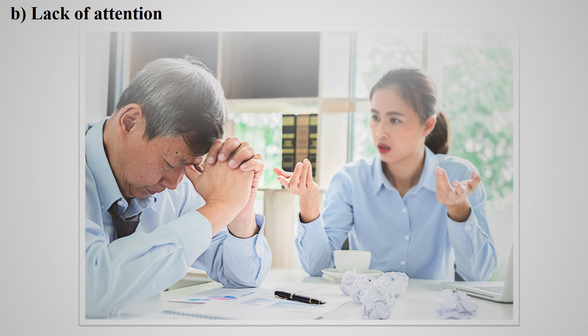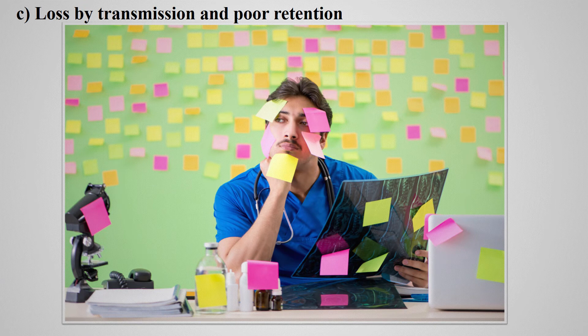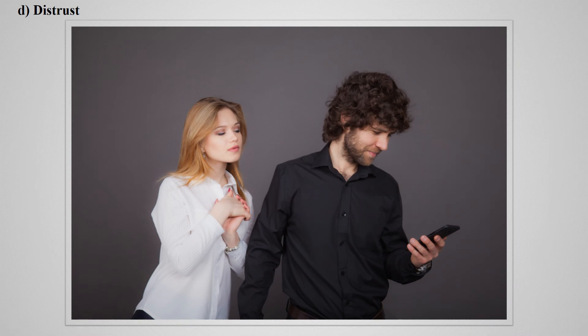The third barrier is loss by transmission and poor retention. When communication passes through many levels, transmission of the message usually results in loss or poor information. This is more common in oral communication. Poor retention is another problem — people generally cannot retain information for a long time.